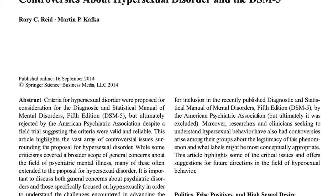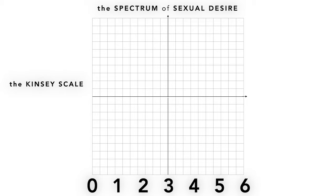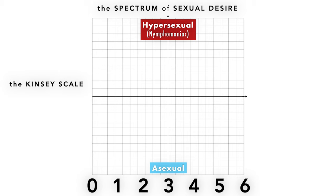Hypersexuality is a disorder listed in the DSM, but as with most if not all psychological disorders, the line between who has it and who doesn't is drawn arbitrarily. So if we intersect these spectrums, we have a nice graph that begins to portray two important components of your sexuality: how bad you want it, and with whom you want to have it.